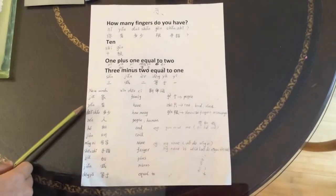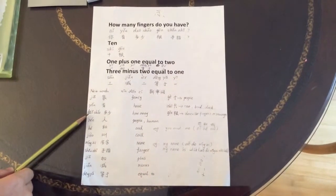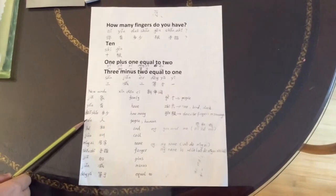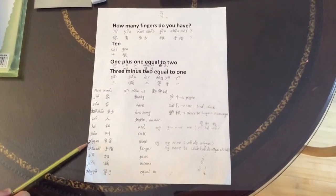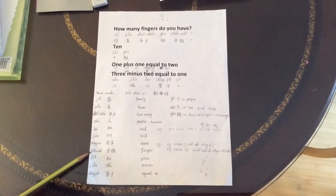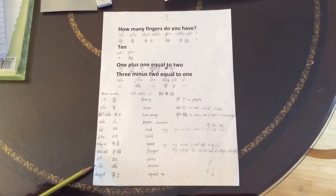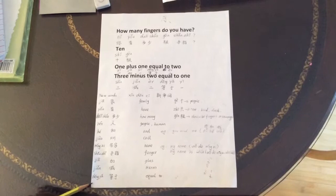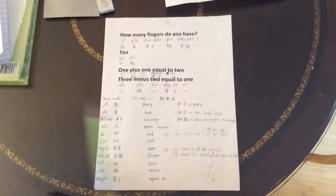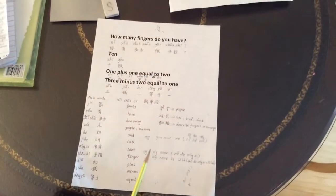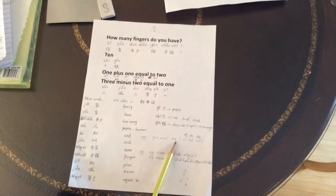加, 有, 多少, 人, 和, 叫, 名字, 手指, 加, 减, 等于. And there are some examples here. For example, you and me.